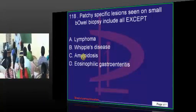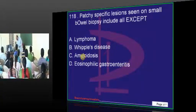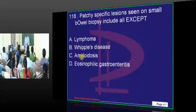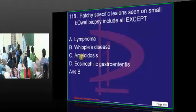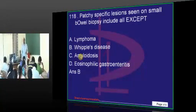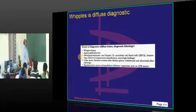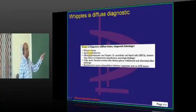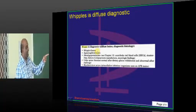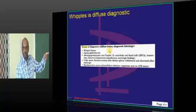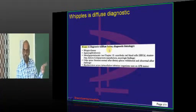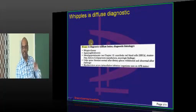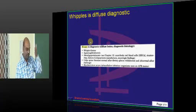For question number 118, we are getting Pratishan, Latap, and Pranita all saying Whipple's. The correct answer is also Whipple's. Why? Because biopsy can show how many patterns? Biopsy is diagnostic — that means specific — but also diffuse. Focal specific, focal non-specific, diffuse specific, diffuse non-specific: four varieties.